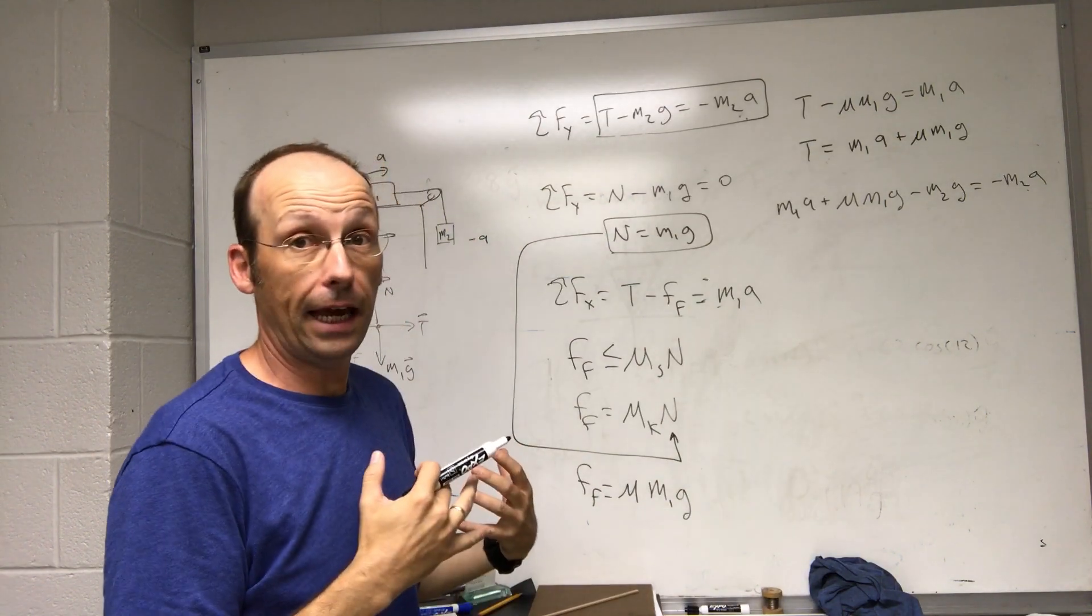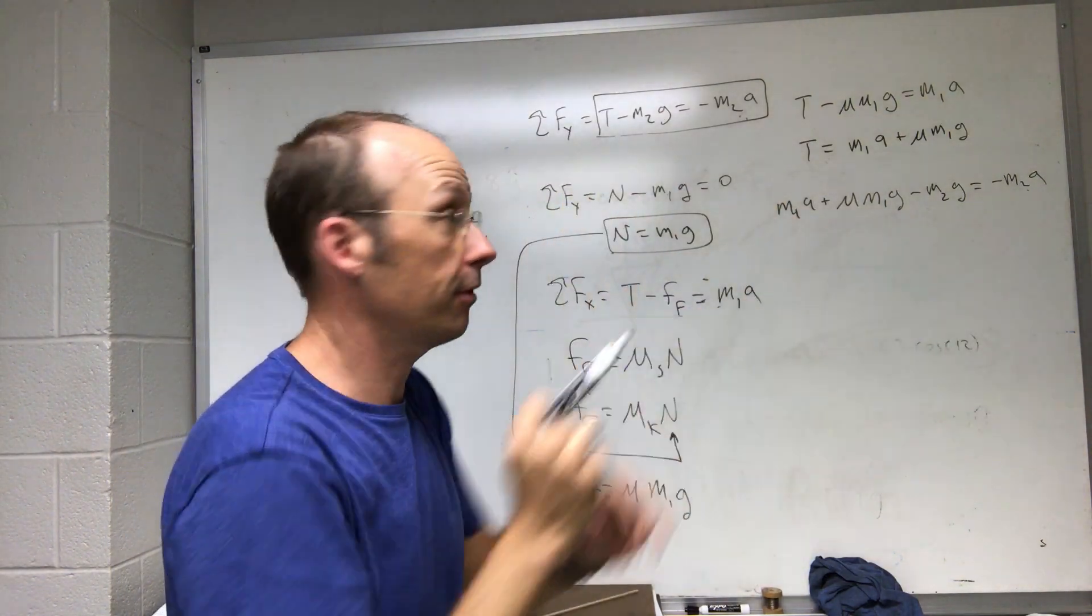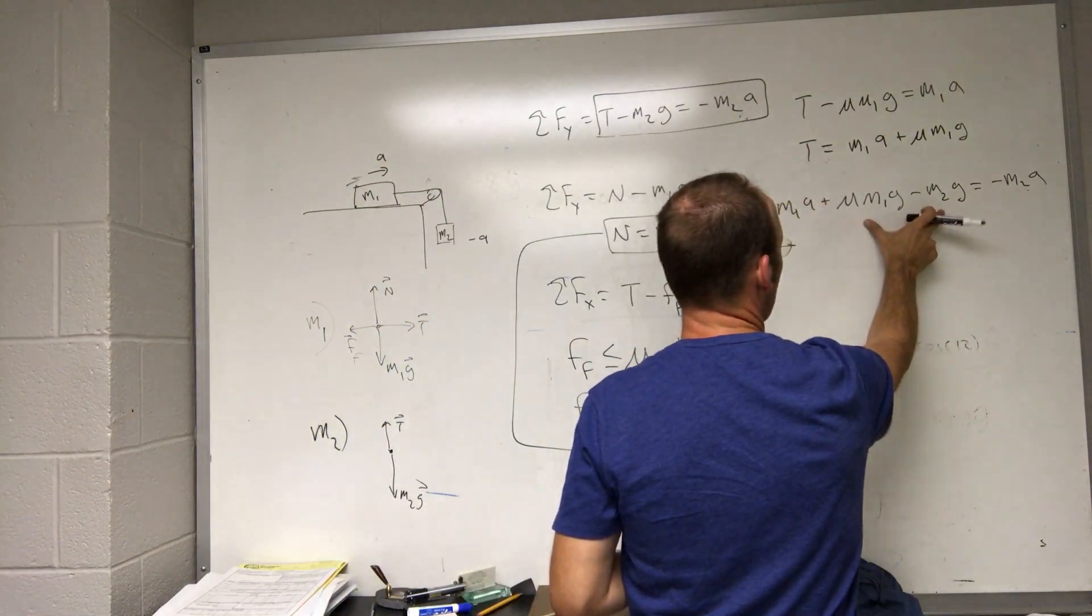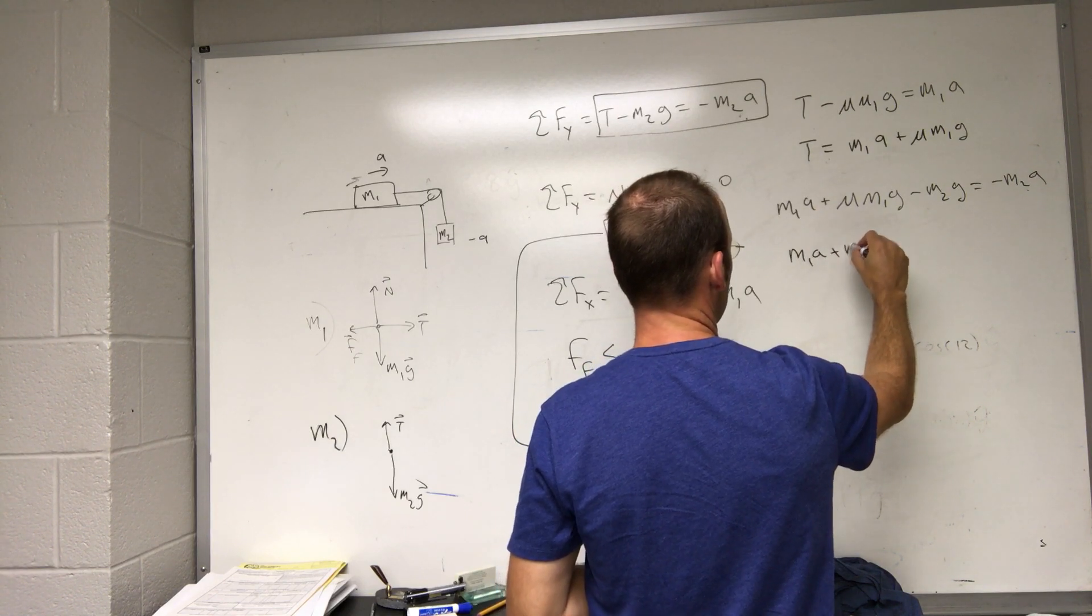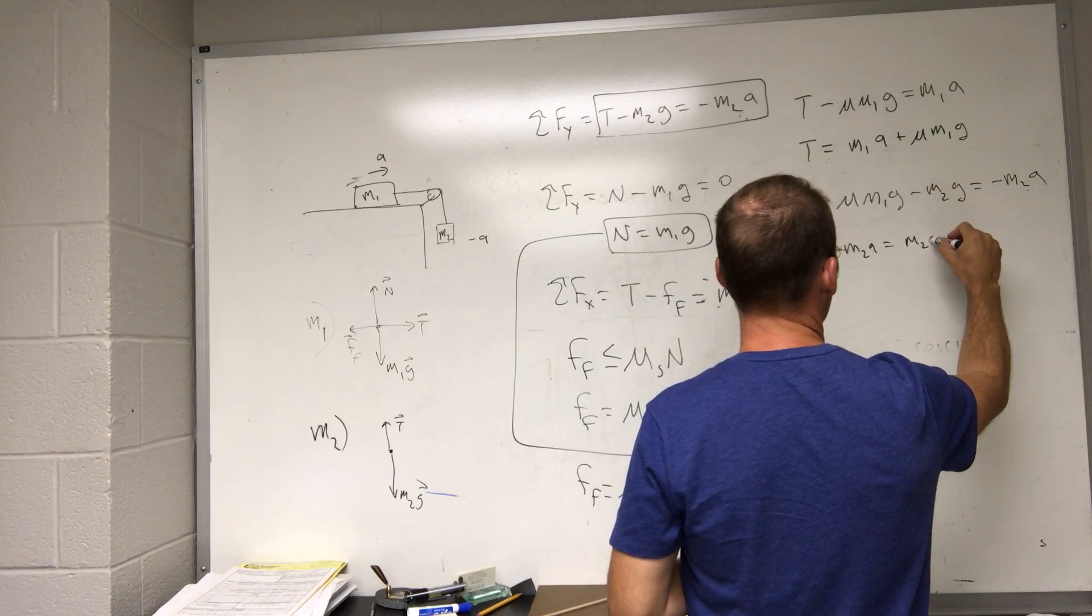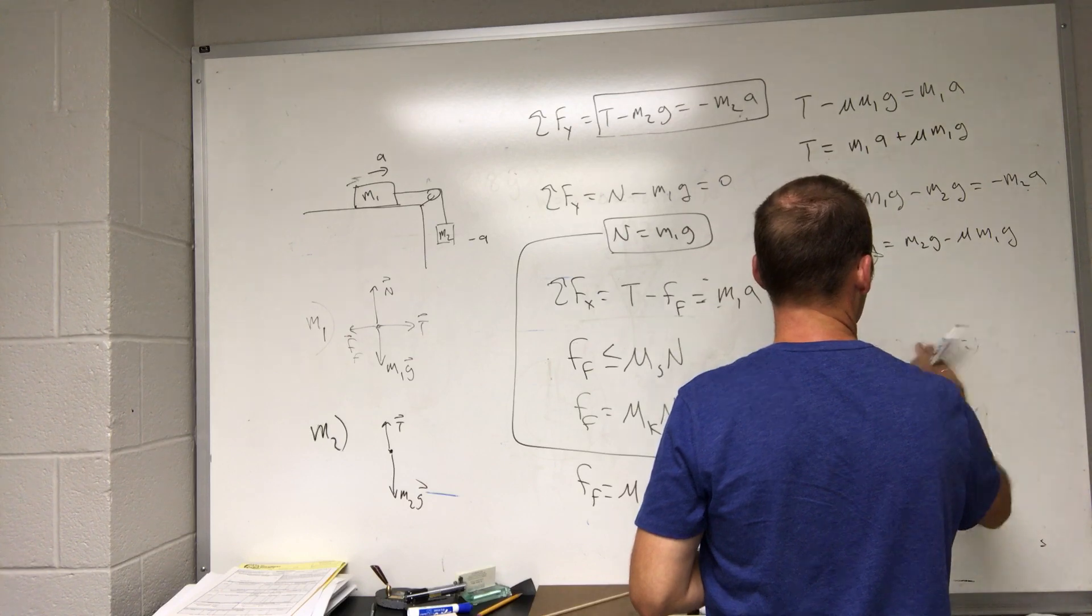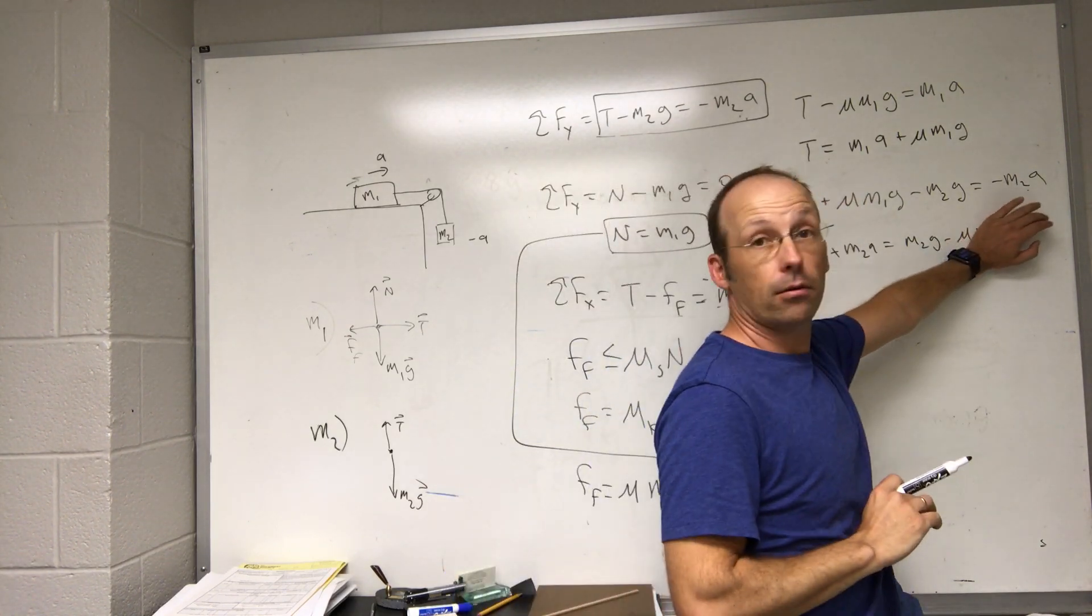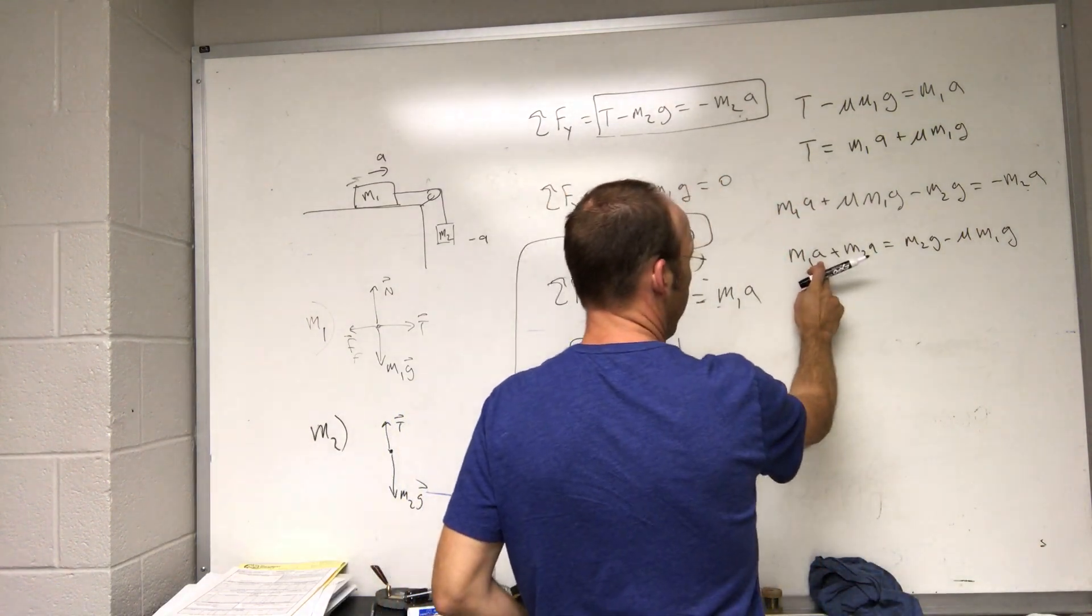I want to solve for the a. So if I get all the a terms on one side, all the non-a terms on the other side, that'd be good. So I can add this to both sides and I can subtract that from both sides. So I get m1 a plus m2 a equals m2 G minus mu m1 G. And I did this problem in class without friction and we just didn't have that term.